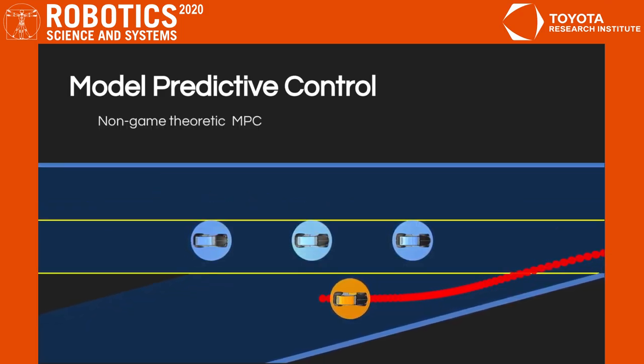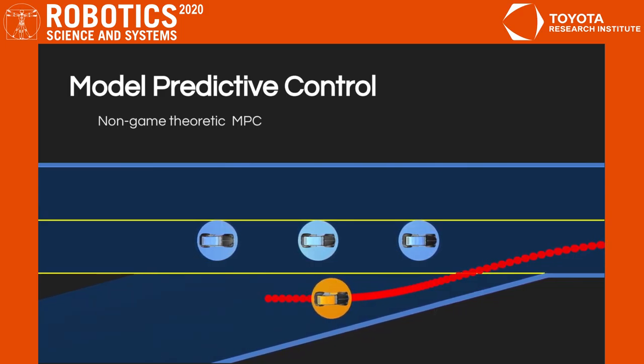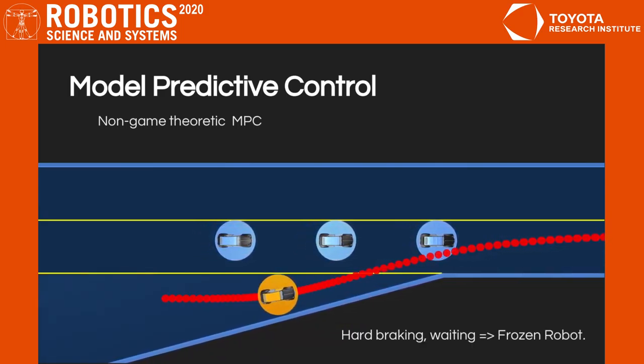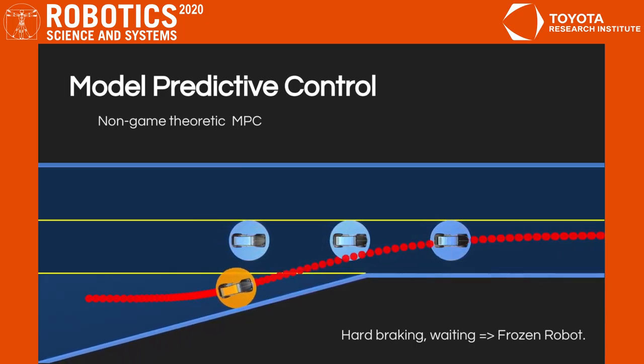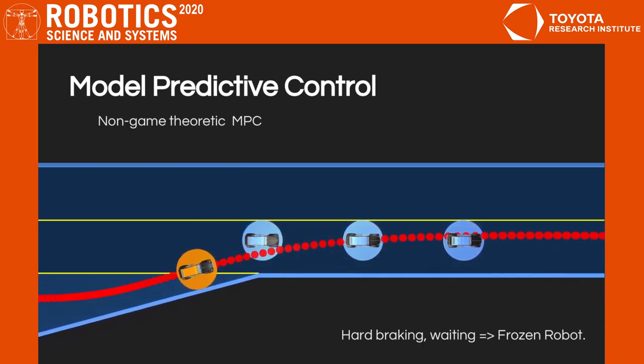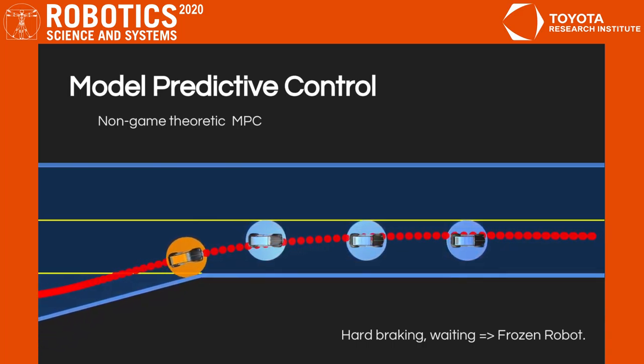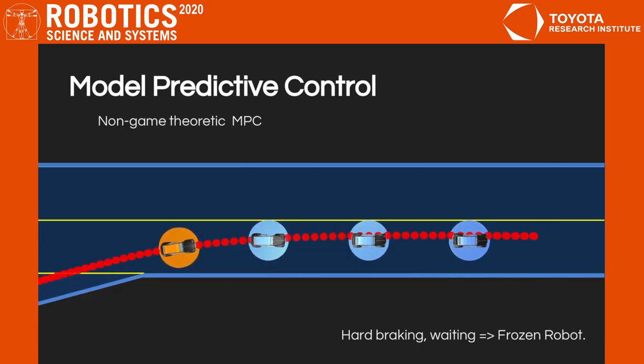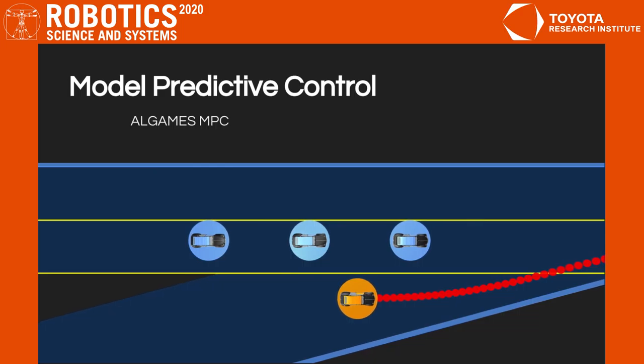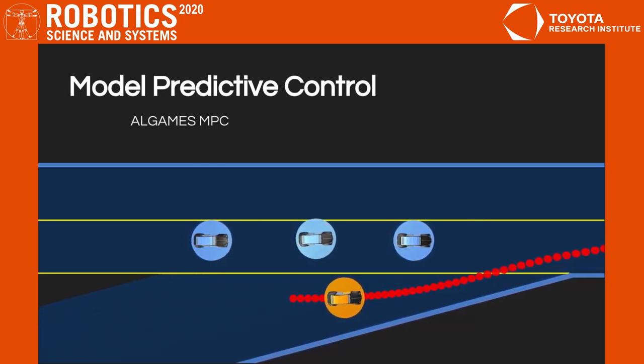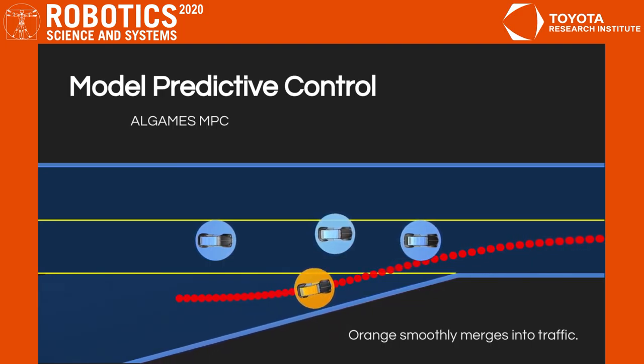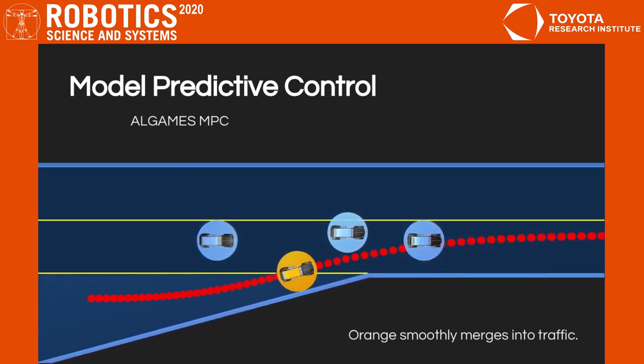We compare this model predictive control implementation of ALGAMES to a non-game theoretic baseline, on a crowded ramp merging which is known to be conducive to the frozen robot problem. The baseline which follows the predict-then-plan approach fails to find a collision-free merging maneuver. Therefore, the only option left for the merging vehicle is to wait for the other vehicles to pass before merging. Through a Monte Carlo analysis, we show that this issue, called the frozen robot problem, occurs in 85% of the cases for the non-game theoretic approach.